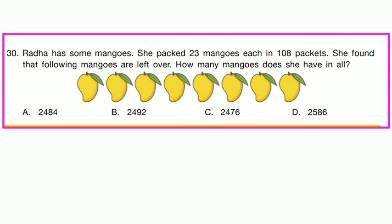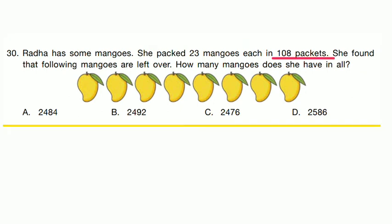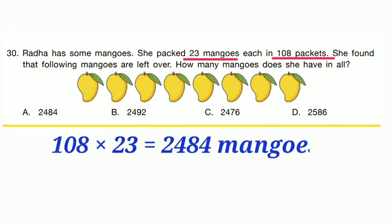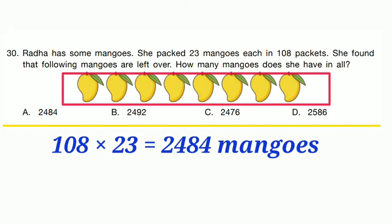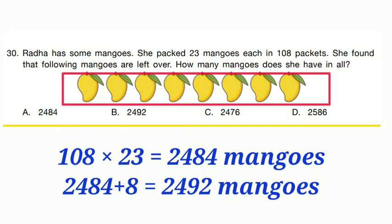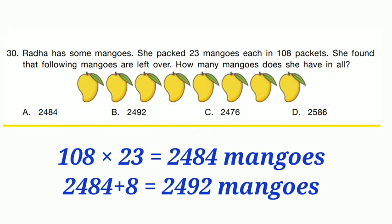Question No. 30: Radha packed 23 mangoes each in 108 packets, with some mangoes left over. Total mangoes in packets = 108 × 23 = 2484. There are 8 mangoes left over. Total mangoes = 2484 + 8 = 2492. Option B is correct.